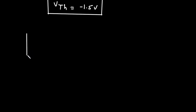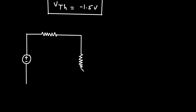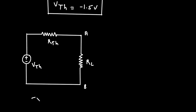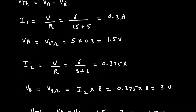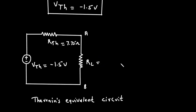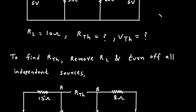Let's draw the Thevenin equivalent circuit. Here, this is VTH, this is RTH, and this is RL. This circuit is called Thevenin's equivalent circuit. The value of VTH is minus 1.5 volts, the value of RTH is 7.75 ohm, and the value of RL is 10 ohm.